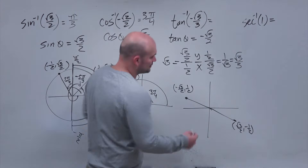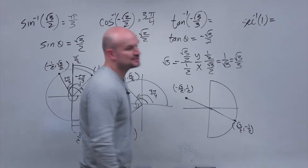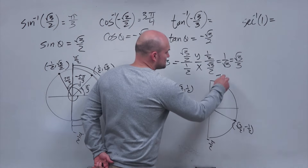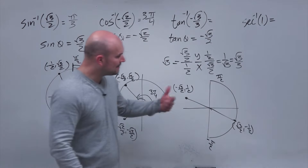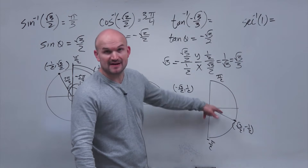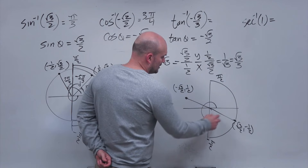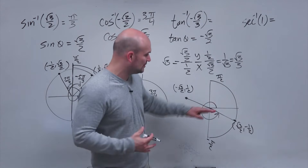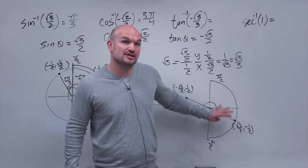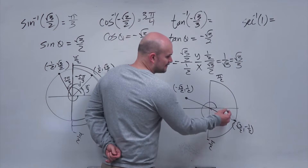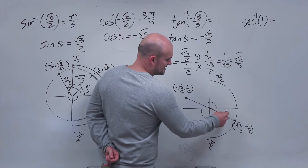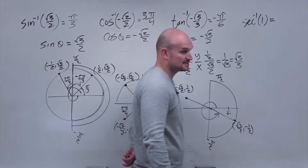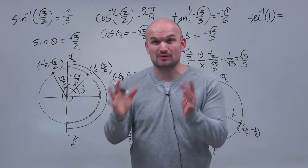The restrictions for tangent are the same as for sine — angles must be between negative pi halves and pi halves. Many students would pick the point in the second quadrant, but that angle goes outside the restriction. Instead of going to 11 pi over six, we go in the negative direction, which is why the answer is negative pi over six.